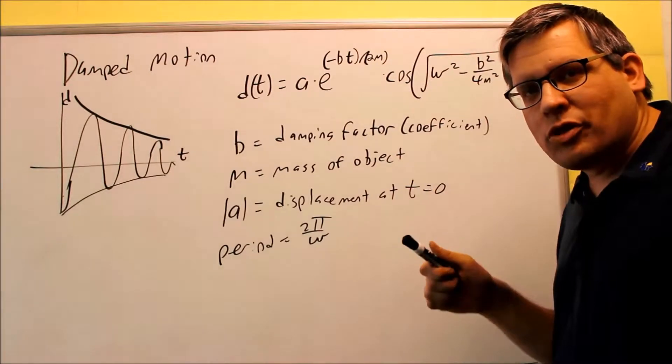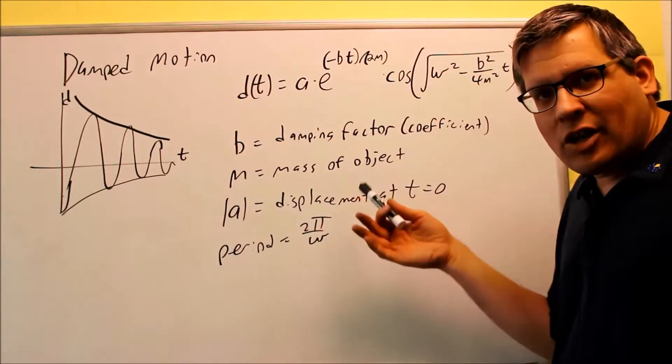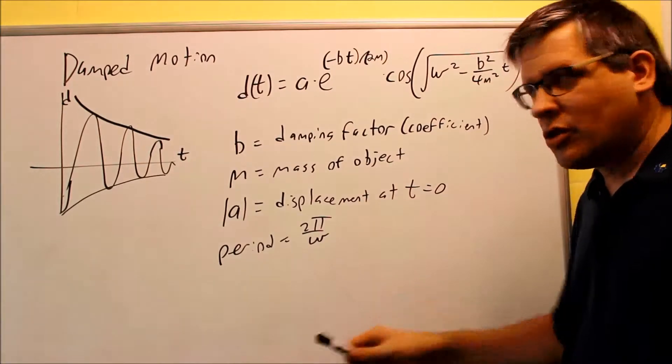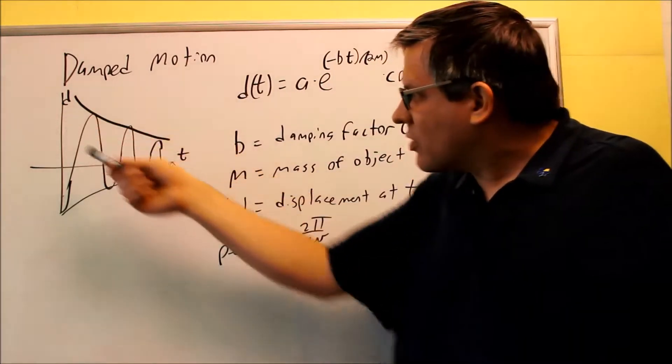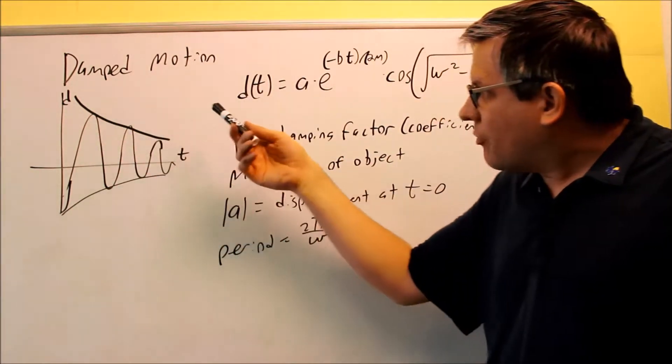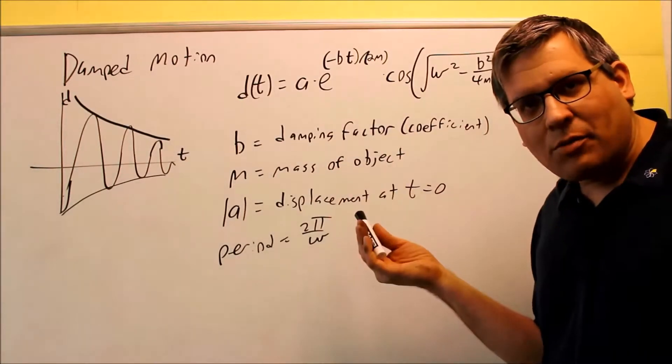In the last couple of examples we did, we showed a spring bouncing back and forth. With that, there would be no air resistance and no friction, so it would bounce back and forth forever. But in the real world, we know that normally we will have that kind of motion going because if you have a spring bouncing back and forth, you know it's going to eventually stop.